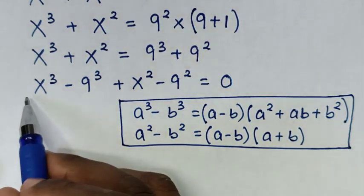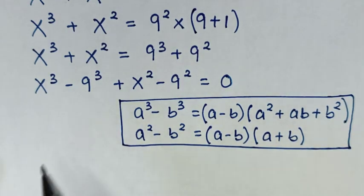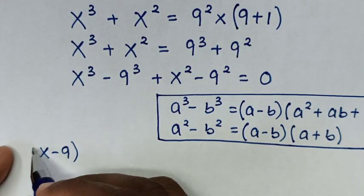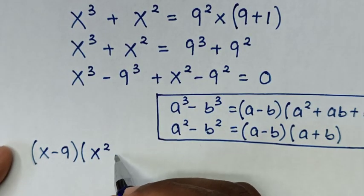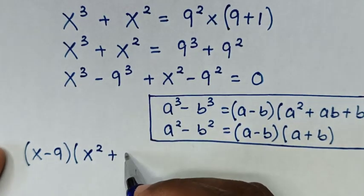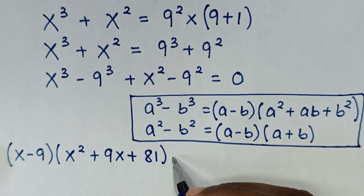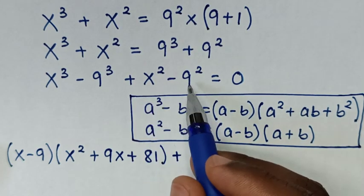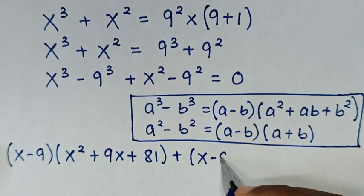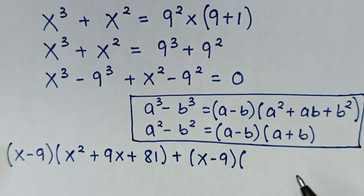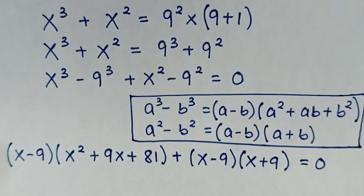Because the first part is in the a³ - b³ form, it becomes (x - 9)(x² + 9x + 81). Then the second part, in the a² - b² form, becomes (x - 9)(x + 9). So together: (x - 9)(x² + 9x + 81) + (x - 9)(x + 9) = 0.